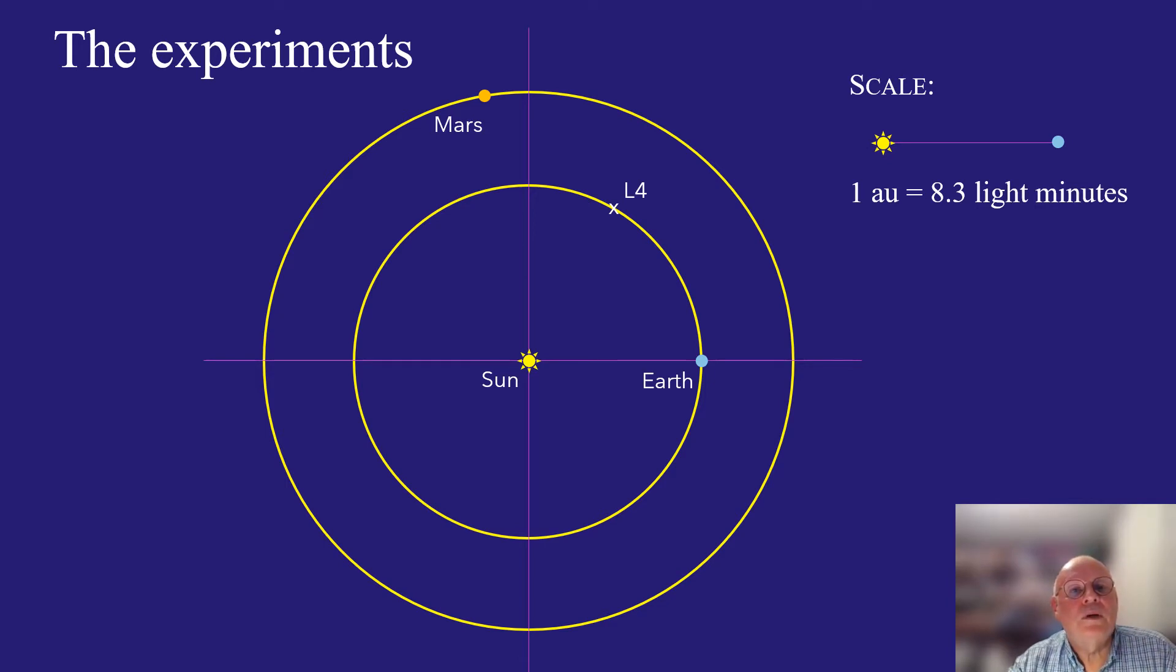L4 forms an equilateral triangle with the Earth and Sun. The Earth-Sun distance is 8.3 light minutes, so the scientists have minutes to carry out their observations.